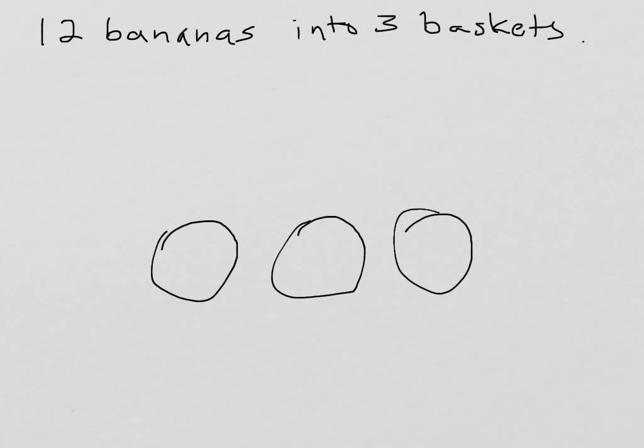Let's say we have 12 bananas and we want to put them into our three baskets. The question would be, if we divide 12 among the three baskets, how many go into each basket? And this is one way to think about division. And if we distribute our bananas equally among the three baskets, we discover that we have four in each basket.